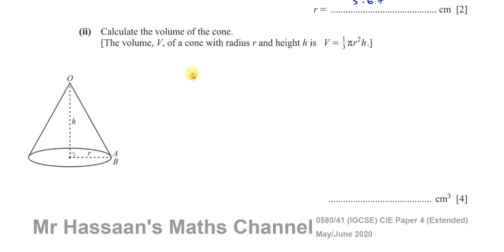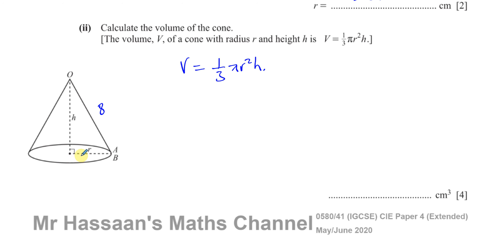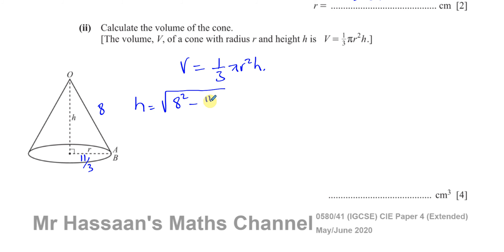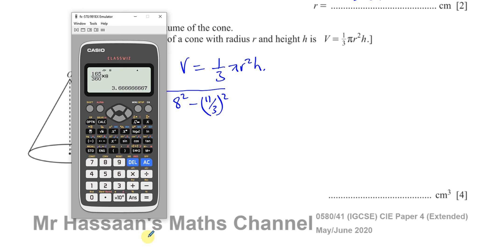Next, calculate the volume of the cone. The formula is (1/3)πR²H. We know OA = 8 cm (the slanted height) and R = 11/3. To find the vertical height H, we use Pythagoras on the right-angled triangle formed by H, R, and the slanted height. H is the shorter side, so H = √(8² − (11/3)²) = √(455/9) = √455 over 3.